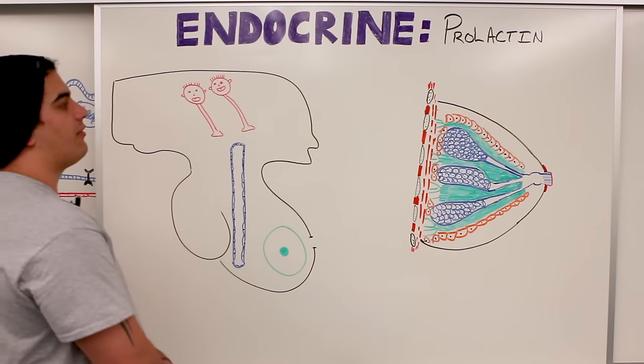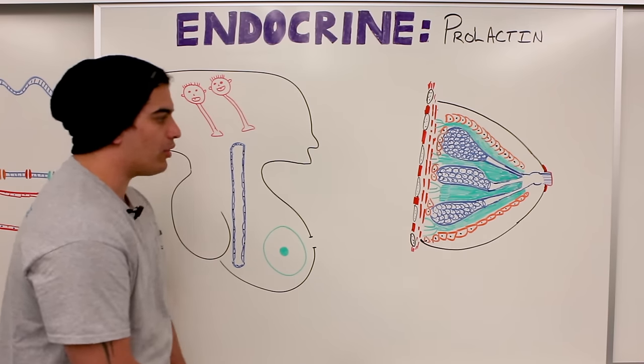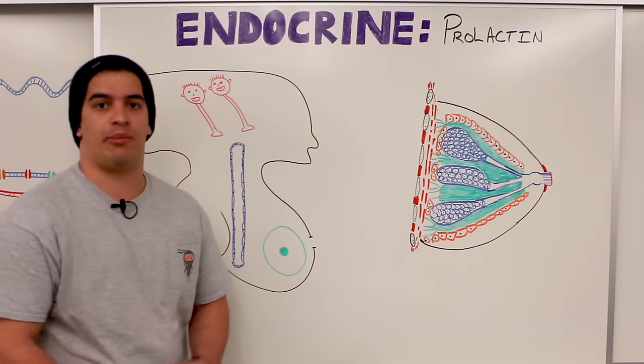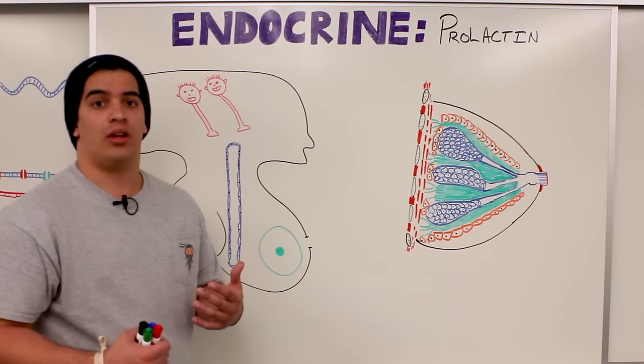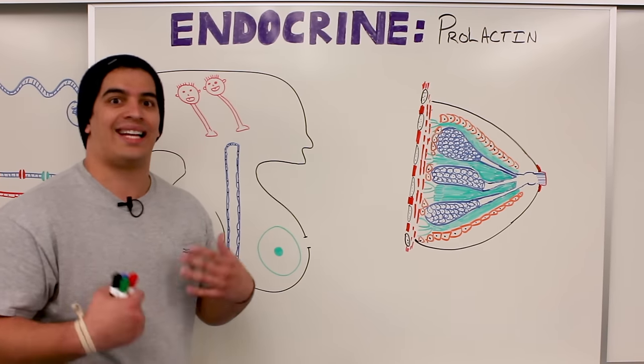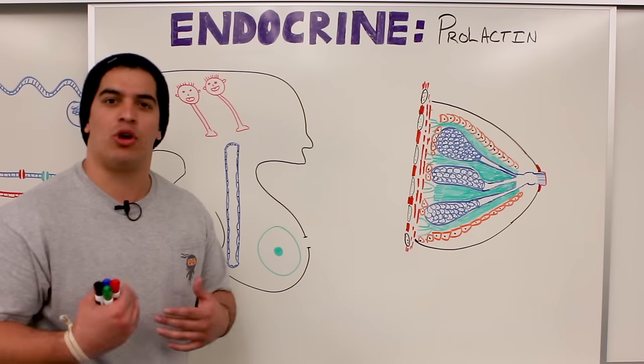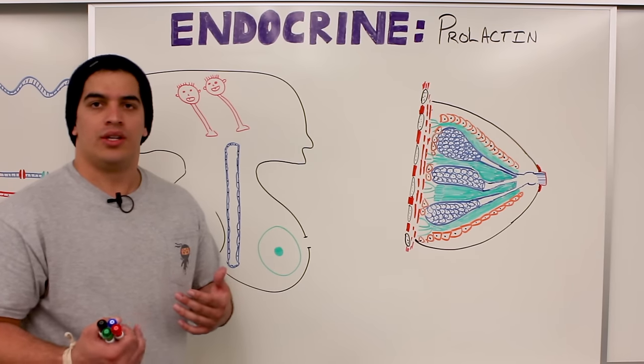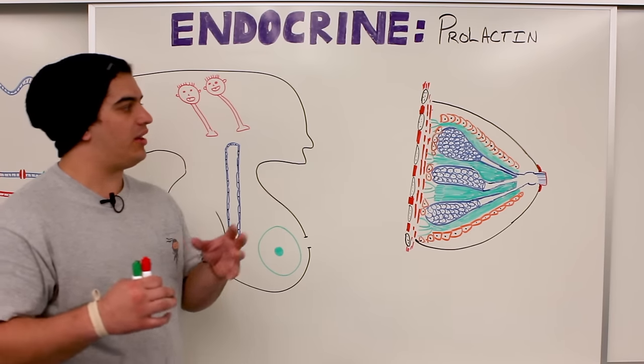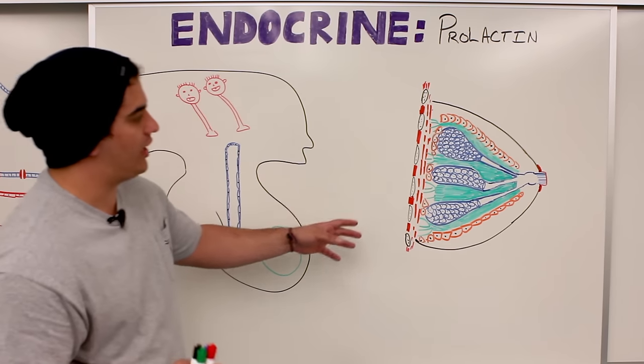So first off, what is the function of prolactin? Prolactin is designed to promote what's called lactation, or milk production. So it's working on the actual mammary gland.